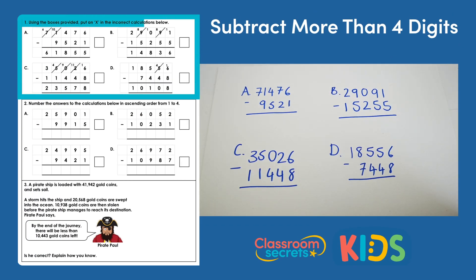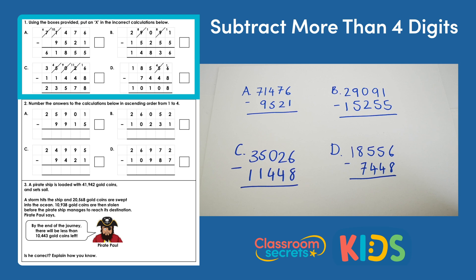Question one says: using the boxes provided, put an X in the incorrect calculations below, and then there are four calculations that have already been performed. What we need to do to solve this question is do the calculations ourselves to see whether or not the calculations on the sheet are correct or not.